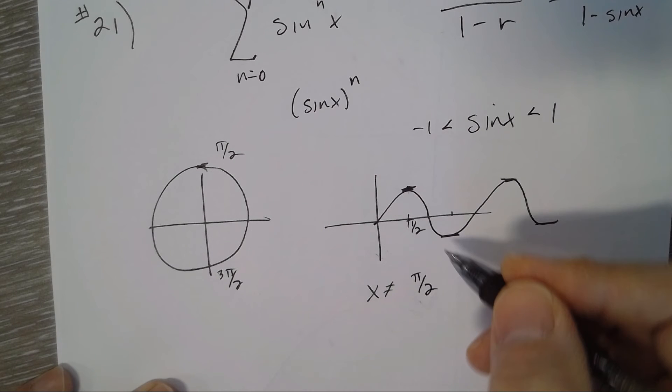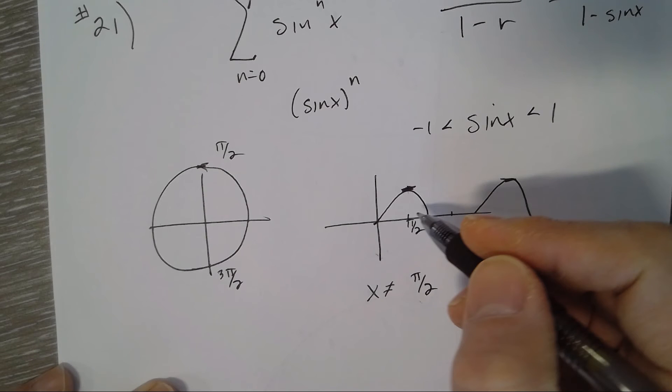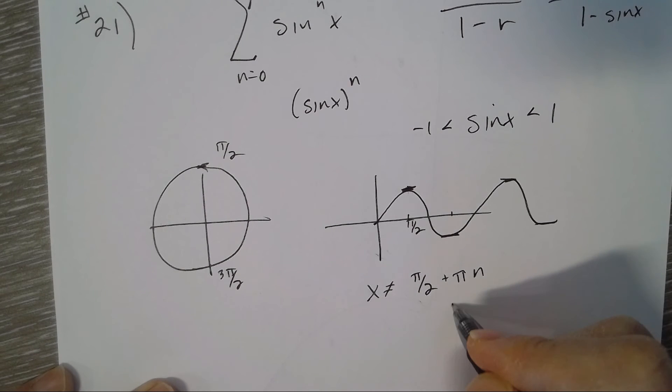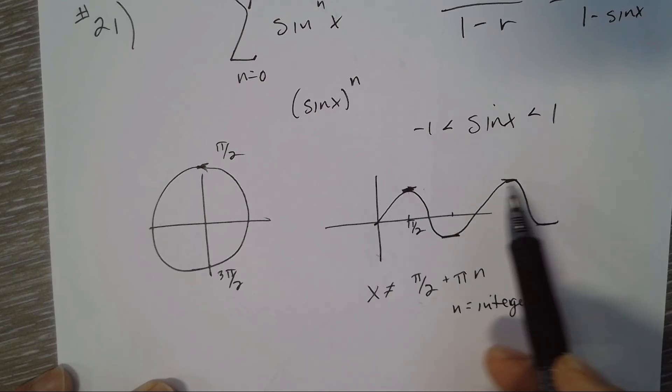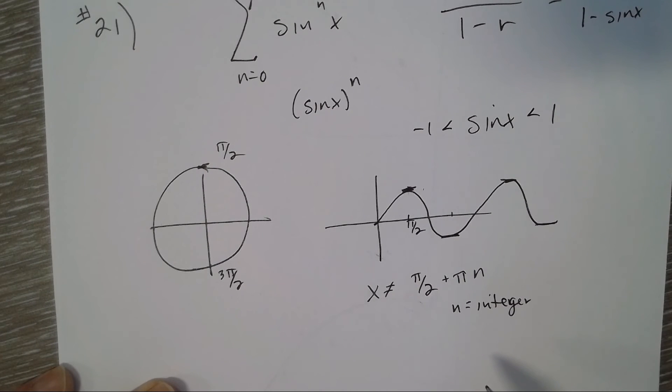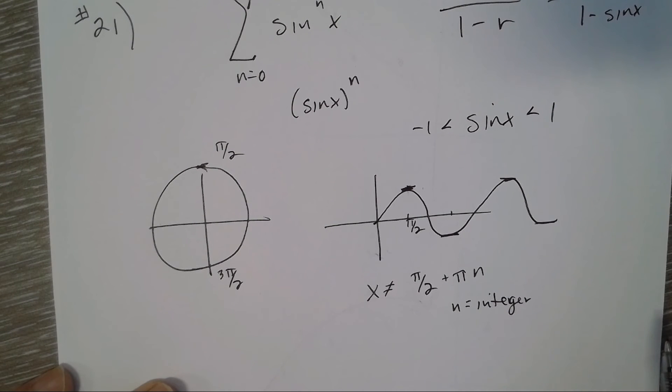So x can't be π over 2, and then I know I'm going up π every time, so π over 2 plus nπ where n is an integer. So find the first one and then figure out what you're going up by and then multiply that by n. Okay, so it'll converge for all x except for those ones.